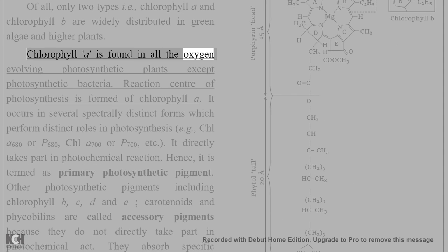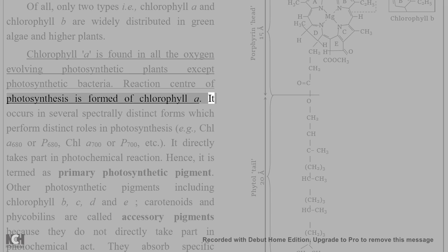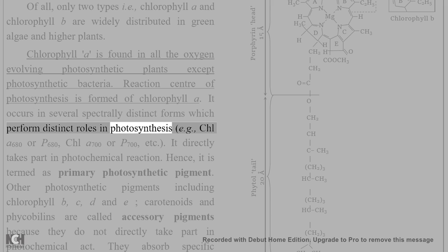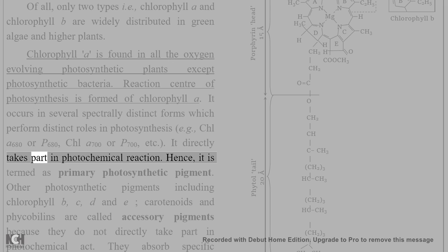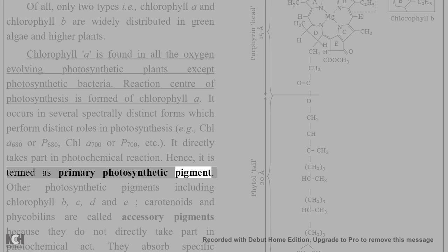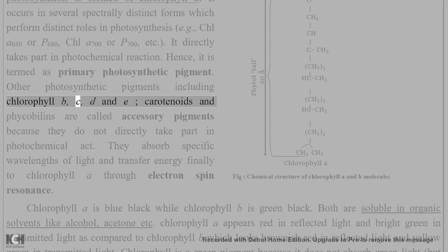Chlorophyll a is found in all the oxygen-evolving photosynthetic plants except photosynthetic bacteria. The reaction center of photosynthesis is formed of chlorophyll a. It occurs in several spectrally distinct forms which perform distinct roles in photosynthesis, e.g., Chl a 680 or P680, Chl a 700 or P700, etc. Chlorophyll a directly takes part in photochemical reactions, hence it is termed the primary photosynthetic pigment.